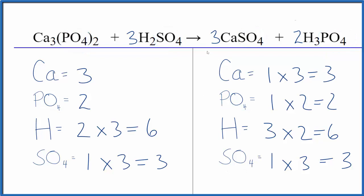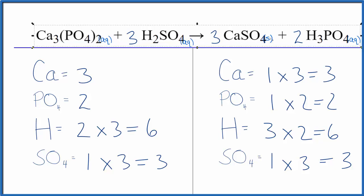If we wanted to write the states, everything would be aqueous, except the calcium sulfate. Calcium sulfate, that would be insoluble. So that would fall to the bottom of the test tube as a precipitate. Maybe a little bit would dissolve, but most of it would be a solid, and that would be our precipitate.